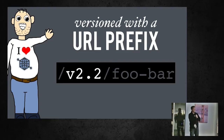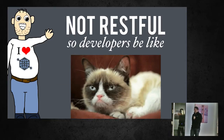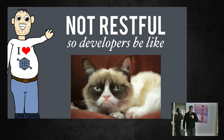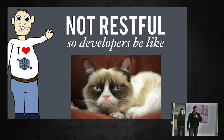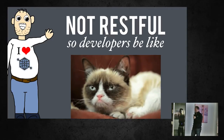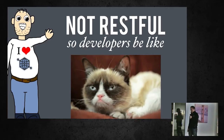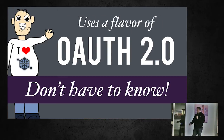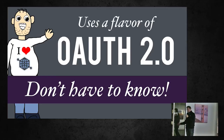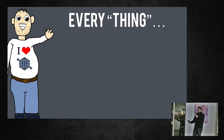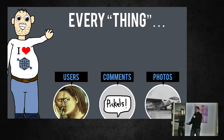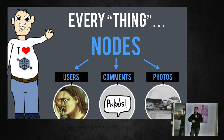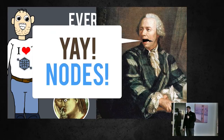It's not RESTful, so developers who are really RESTful-minded will complain, but let's just get over it and learn it. It uses a flavor of OAuth 2, but you don't have to know that. Everything on Graph — users, comments, and photos — are all things you'd see on Facebook. These are all nodes, same as in graph theory. Euler's really excited because we're using the same terminology from the 1700s.